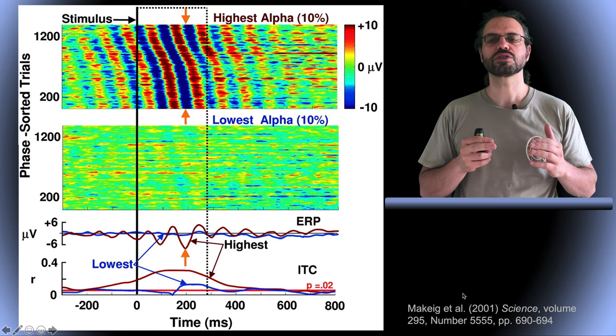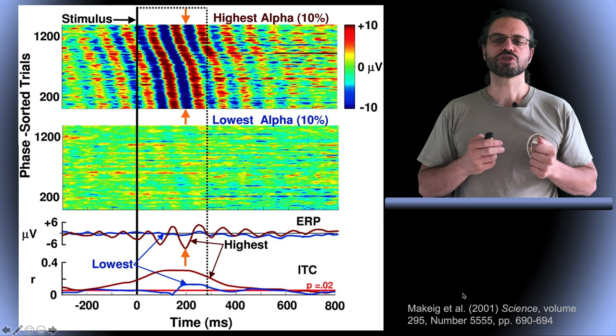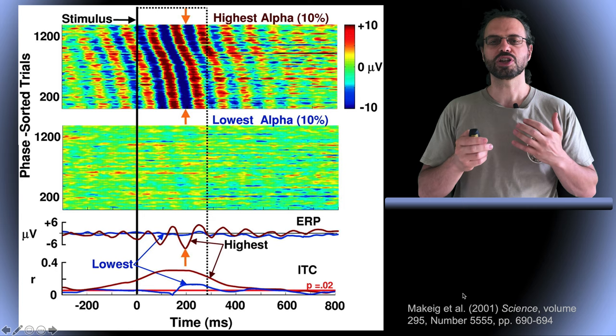Now this is the ERP and the inter-trial coherence for these two sets of trials. We can see that the ERP shows oscillation for the data trials with high alpha, but not for the data trials with low alpha. And this is also reflected in the inter-trial coherence.